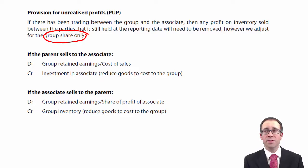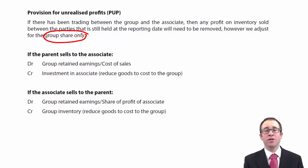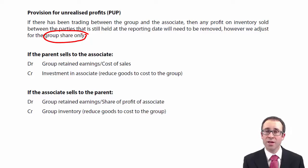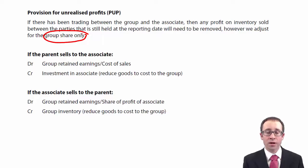If we own 40% of an associate, we'll adjust for 40% of that provision for unrealized profits. As well as looking at the percentage ownership, we also need to take consideration of the direction of the sale to then look at how the debits and the credits work.